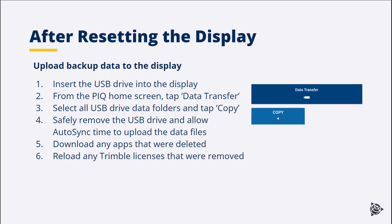From the home screen, enter the Data Transfer screen. Select all the files from the USB drive and copy the files from the drive to the display. Once all files are copied, Autosync will make an online copy of all the data, which will be pushed to any other displays using Autosync. Any licenses that were on the display prior to the reset will need to be re-uploaded to the display.